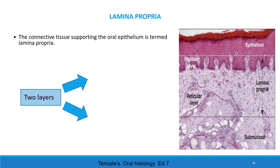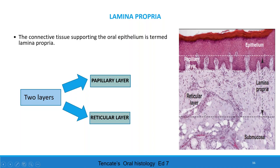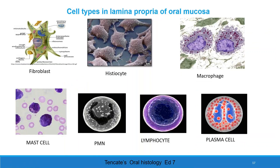Lamina propria. The second layer is the lamina propria. The connective tissue supporting the oral epithelium is termed the lamina propria. It is divided into two layers: the papillary layer, which is closer to the epithelium, and the reticular layer, which is closer to the submucosa. The lamina propria contains two main components: cells and fibers. The cells present include fibroblasts, which help in the secretion of fibers and ground substances.